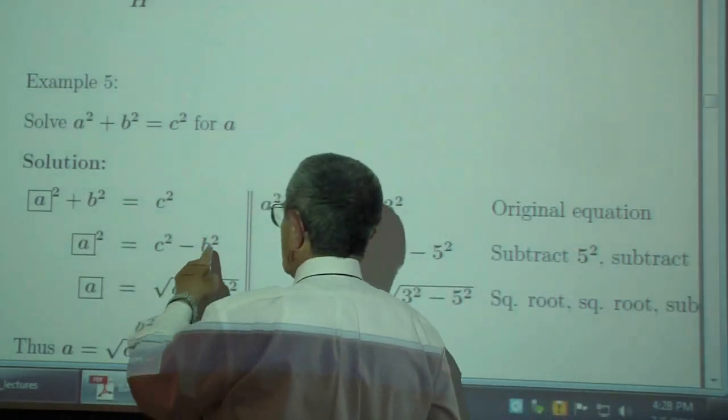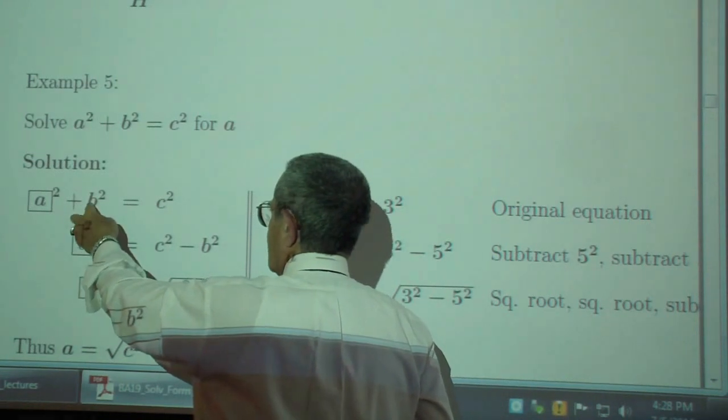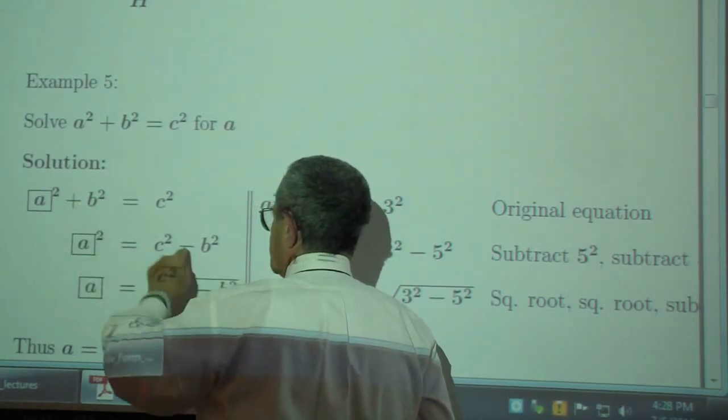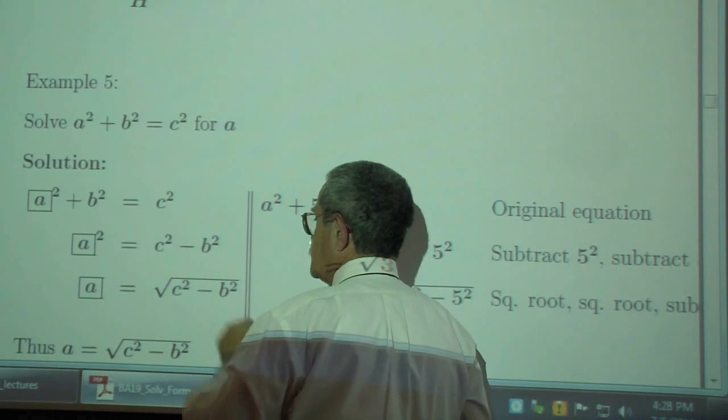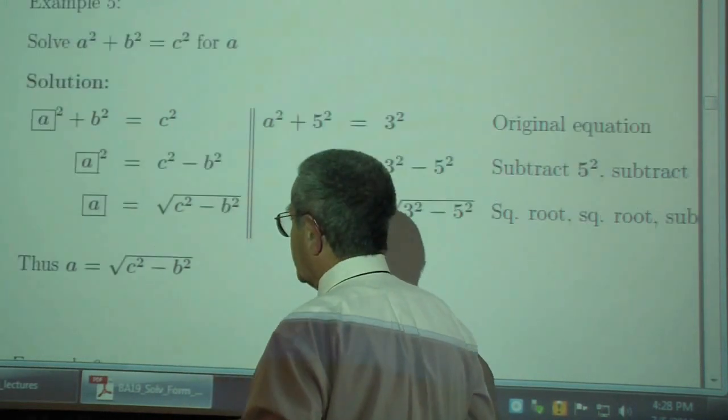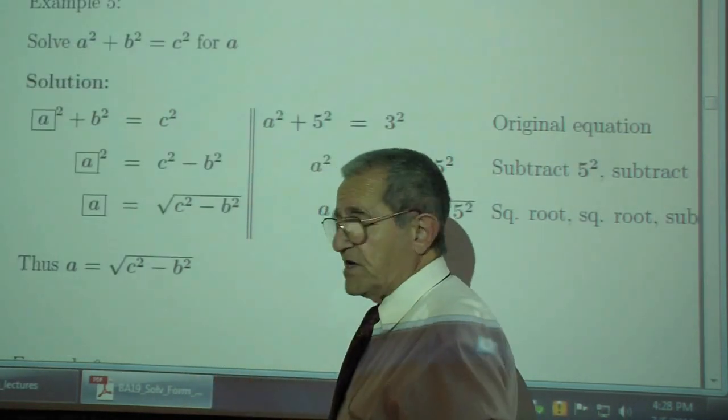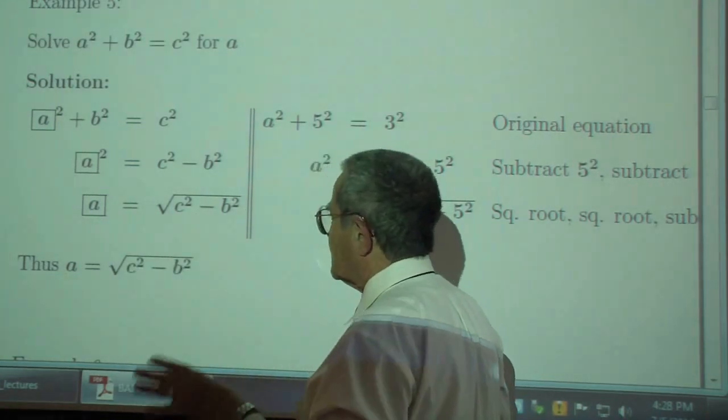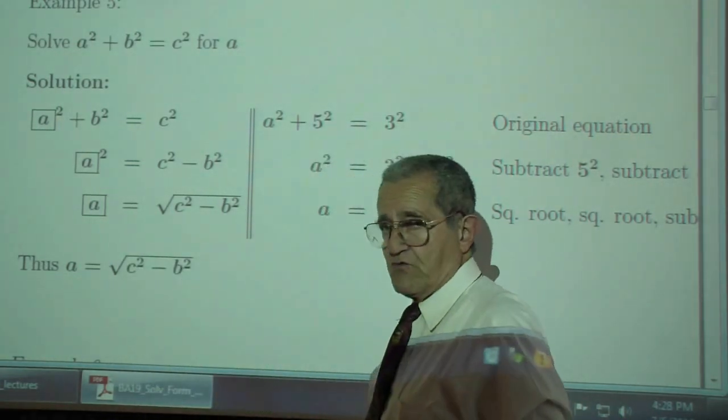So the first thing I want to do is I want to isolate this term, so get rid of the b squared. It's added, so you subtract b squared from both sides, and then you take the square root of both sides. Later on, we'll say that a is really plus or minus the square root, but for right now, let's be happy with just the square root.